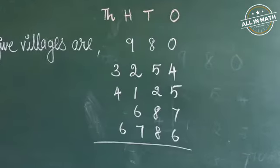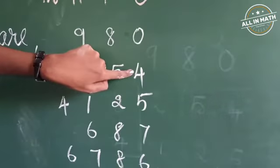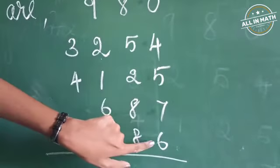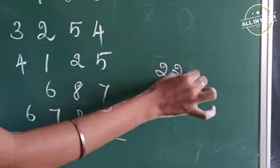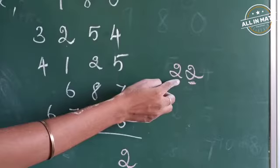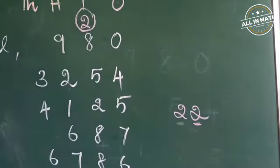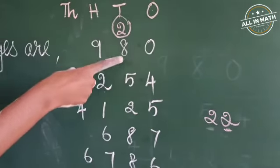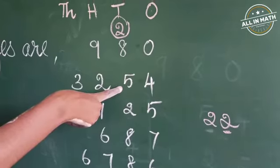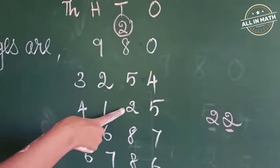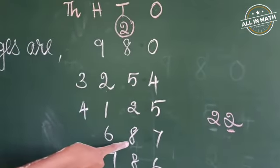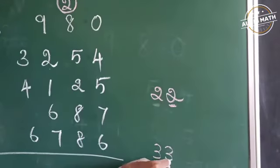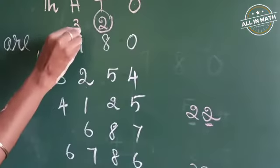What is 0 plus 4? It's 4. 4 plus 5 is 9. 9 plus 7 is 16. 16 plus 6 is 22. So here I am going to take 2 in the 1's place and take 2 as a carry over in the 10's place. Now we are going to add the numbers in the 10's place. 2 plus 8 is 10. 10 plus 5 is 15. 15 plus 2 is 17. 17 plus 8 is 25. 25 plus 8 is 33. So write 3 in the 10's place and take 3 as a carry over in the 100's place.